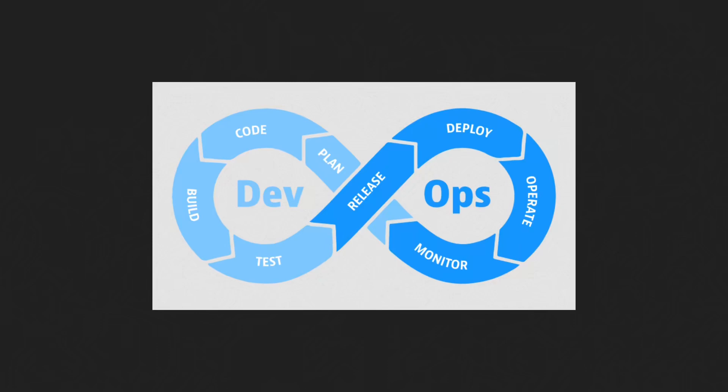Another essential aspect is security and compliance. DevOps doesn't just apply to development and operations teams — it's also important to consider security and compliance in the pipeline. Make sure appropriate measures are in place to ensure code changes are secure and compliant with relevant regulations. Overall, every organization is different and will have unique requirements and challenges when setting up a DevOps pipeline, so it's important to be flexible and adapt accordingly to meet your specific needs.